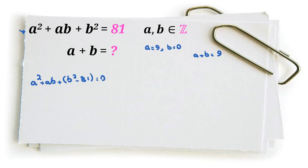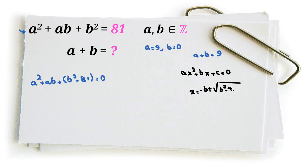Now we can apply the quadratic formula. If we have ax squared plus bx plus c equals 0, then x equals negative b plus or minus the square root of b squared minus 4ac, all over 2a.